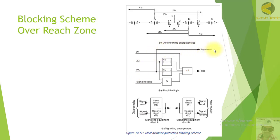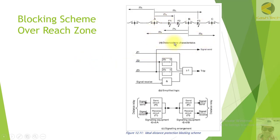If the relay picks up in zone 1 or zone 2, it does not send any blocking signal but starts the normal timers. If no blocking signal is received from the remote end and the relay has picked up in zone 2, it trips quickly — almost immediately. This is the example of the blocking scheme.